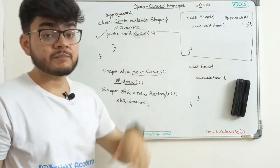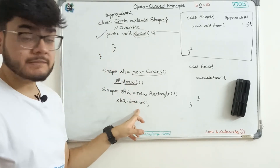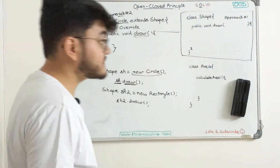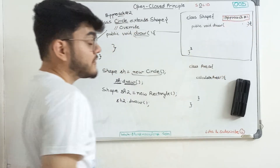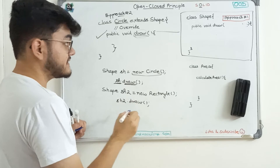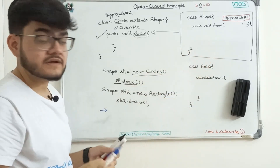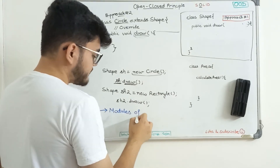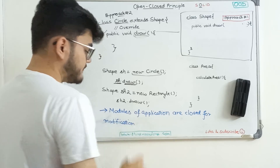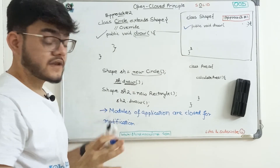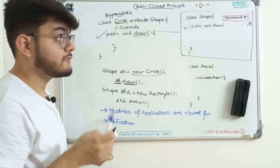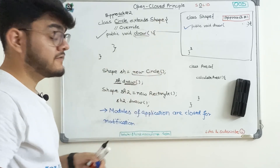The open-close principle uses the second approach and disregards approach one. Approach one is a violation of the open-close principle. The open-close principle states that a class or the modules of a class — for example, draw is a module of the class — are closed for modification. This means if I've created a module like the draw function, I'm not allowed to modify it. If I want to add a rectangle, I have to write another if-else case, which means I'm modifying the draw function — and that is a violation.